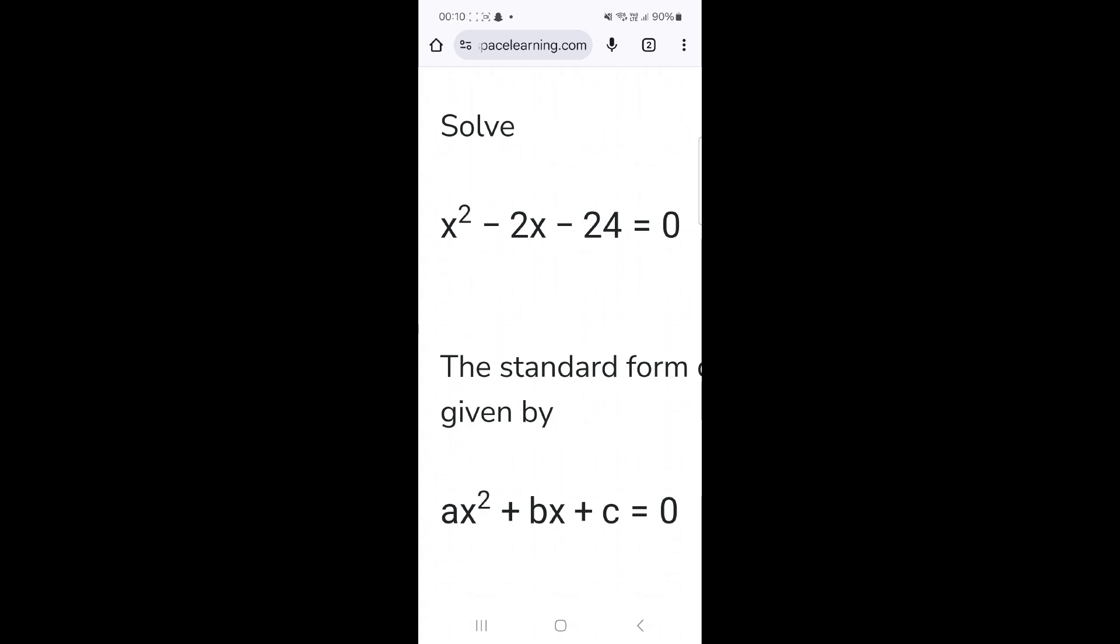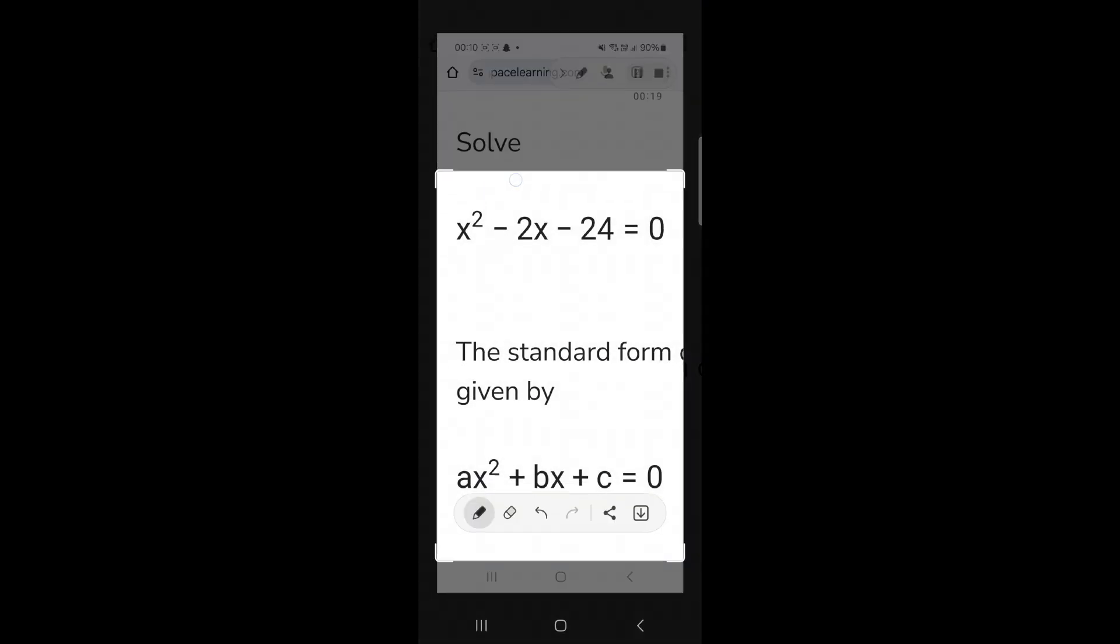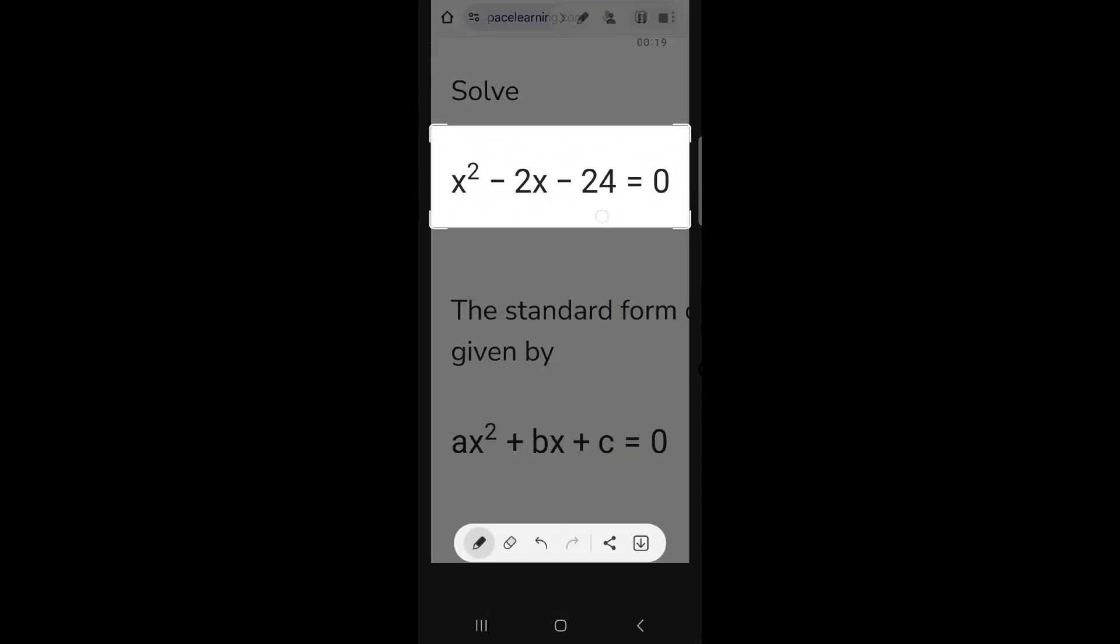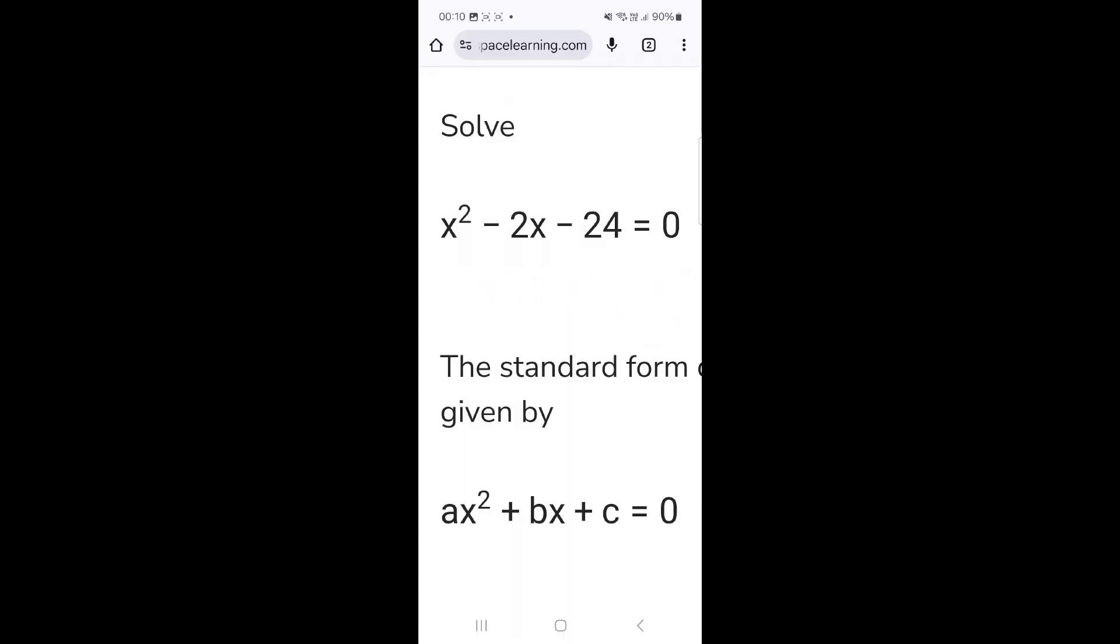Through the quadratic equation, I will simply take the screenshot and then we will trim the screenshot so that only the equation is there. We will save it. Now we will go back to our ChatGPT app, click on plus, and add the image.